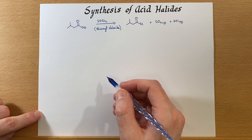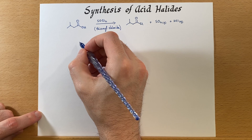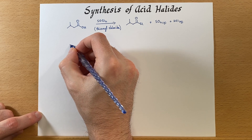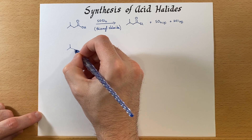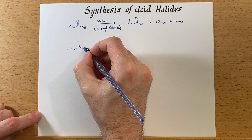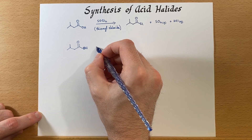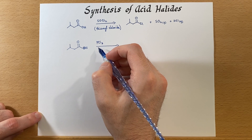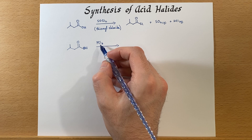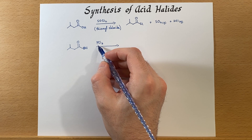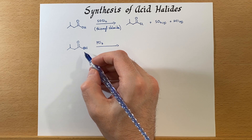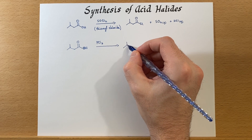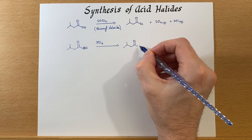There are other methods that do the same reaction in a slightly different way. We can use PCl3 — remember PCl3 and PBr3, the reagents that convert alcohols into chlorides? Well, there's an OH right here on the carboxylic acid, and PCl3 can do the exact same thing: convert that OH into a chloride to give the acid chloride. I'm going to skip the mechanism and just talk about how you can make these.